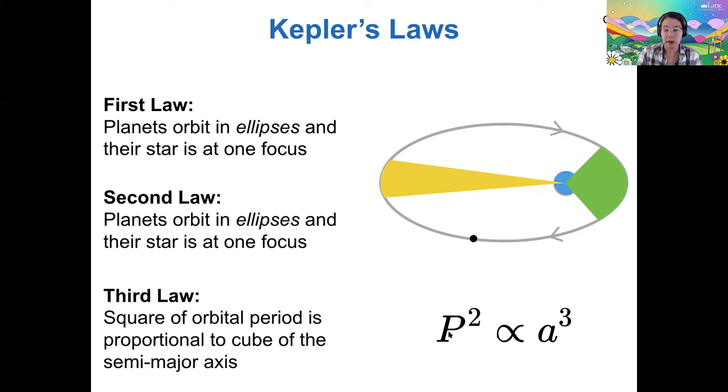The third law says that the square of the period is proportional to the cube of the semi-major axis. So this is a more complicated proportionality than the direct proportionality of force to mass or the inverse square proportionality on radius.